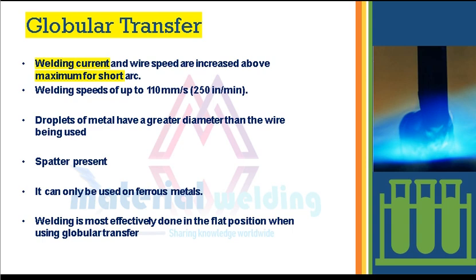Globular transfer mode produces droplets of metal with a greater diameter than the wire being used. Due to these bigger droplets, spatter is present in this process. It can only be used on ferrous metals. Welding is most effectively done in the flat position when using globular transfer, restricting this mode mostly to flat position welding applications. Let's see this video and understand how the transfer happens.